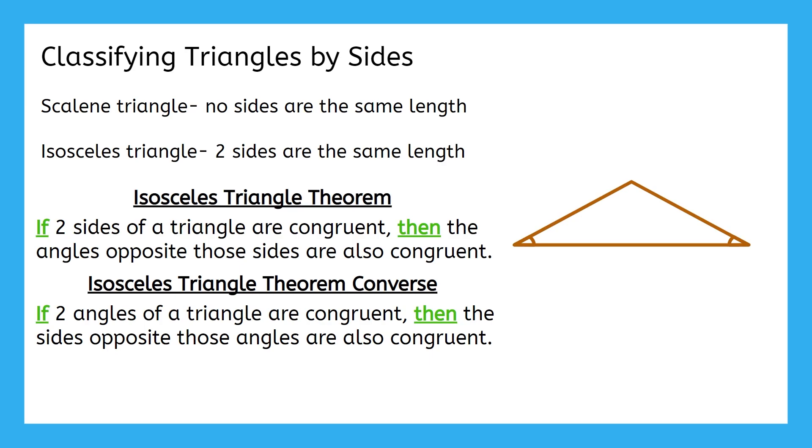Right, it's the second statement. The isosceles triangle theorem converse tells us that since the angles are congruent, the opposite sides are congruent too. Since two sides are congruent, we have an isosceles triangle.